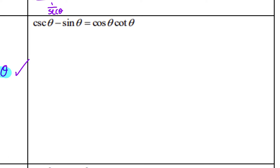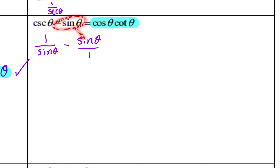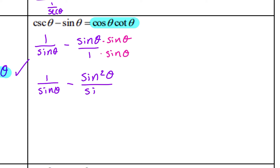Over here, we're manipulating cosine times cosecant minus sine into cosine times cotangent. Again, the right side is the simplest. I like to keep the multiplication side and manipulate the addition/subtraction side. Sine and cosecant are reciprocals, so I'll rewrite cosecant as 1 over sine of theta. Rewriting sine as sine over 1, I can multiply the second fraction by sine over sine to get the same denominator. Now I have 1 over sine minus sine squared over sine, giving one minus sine squared over sine of theta.